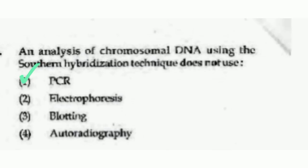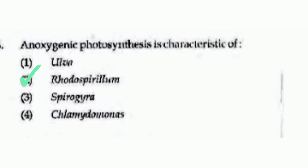Anoxygenic photosynthesis is characteristic of — options are Ulva, Rhodospirillum, Spirogyra, or Chlamydomonas. The right answer is option number 2, Rhodospirillum.